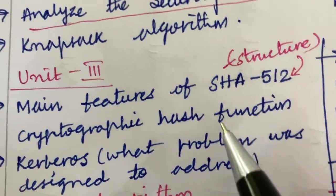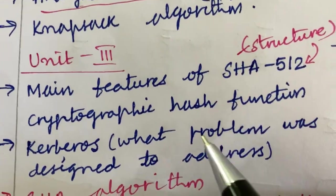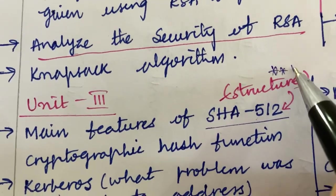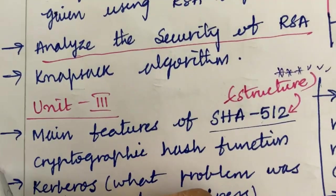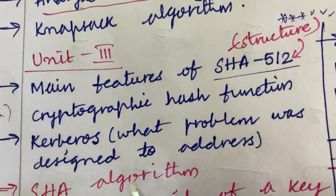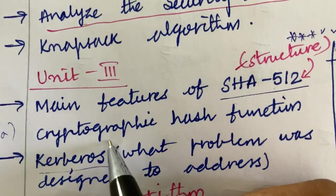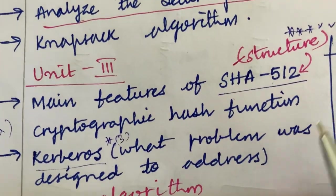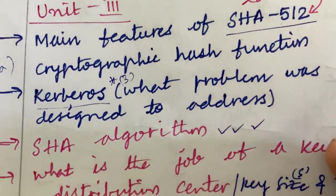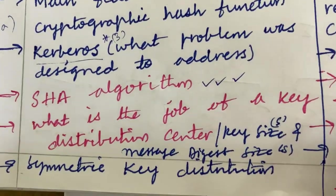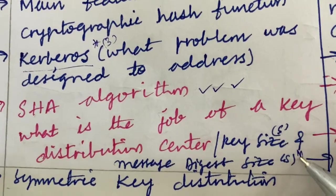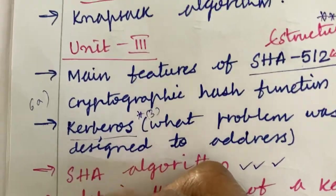Let's jump into Unit 3. Unit 3 is lengthy in its structure. The main features of SHA-512 is a very important question for sure — that may be a 6A question. Using cryptographic hash functions and Kerberos is one of the important 3-mark questions. What problem was SHA designed to address, related to Kerberos, may also be a 3-mark question. The role of a key distribution center, key size, and message digest size may be a 6B question.